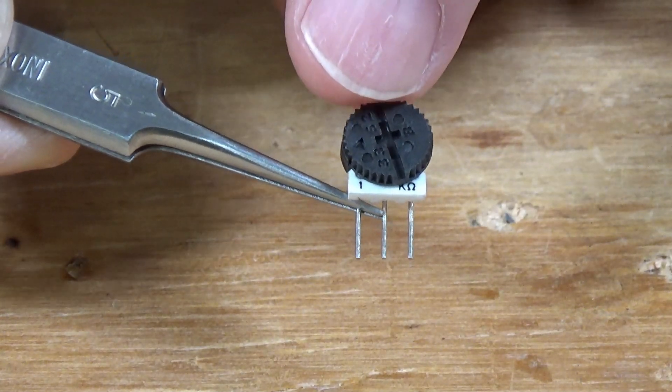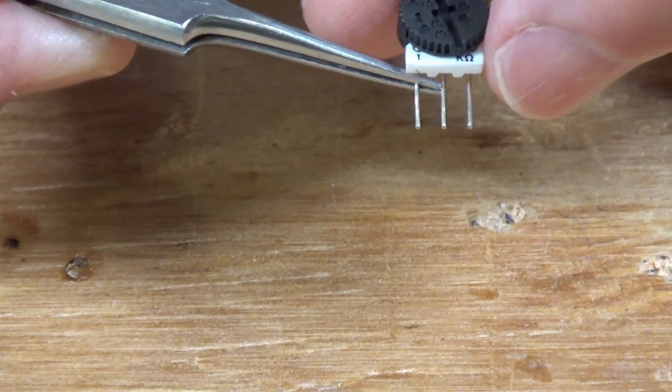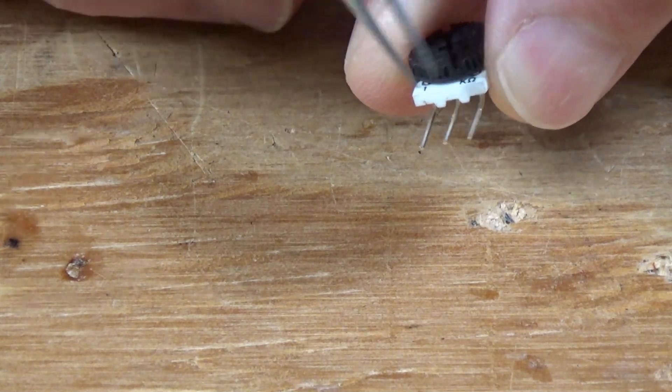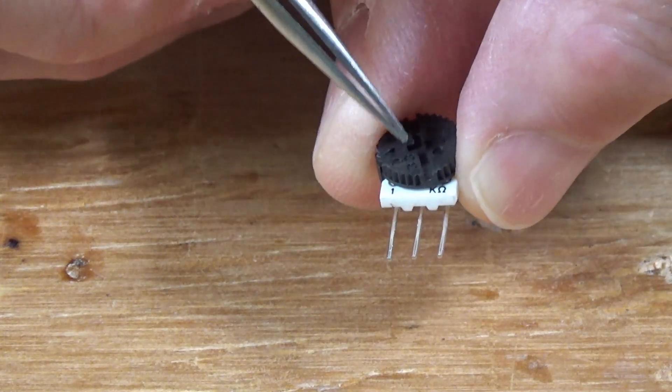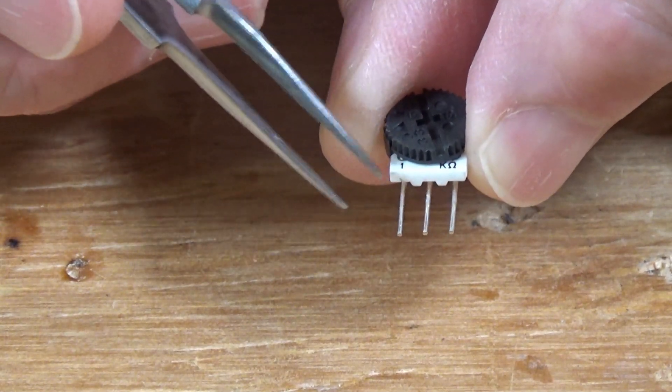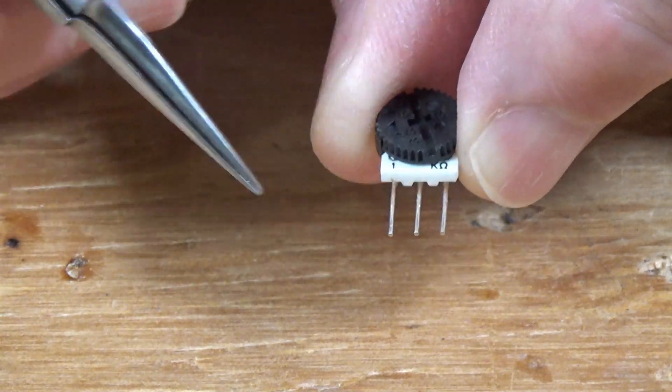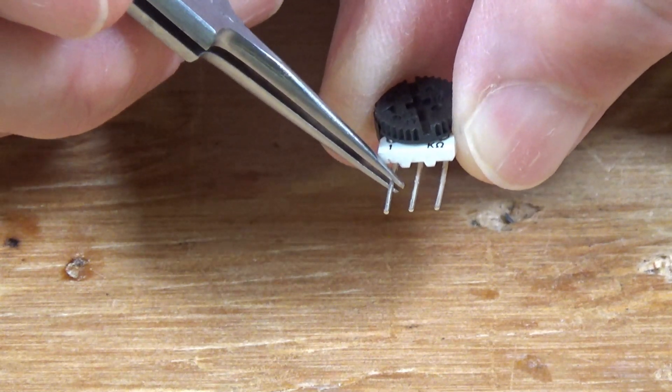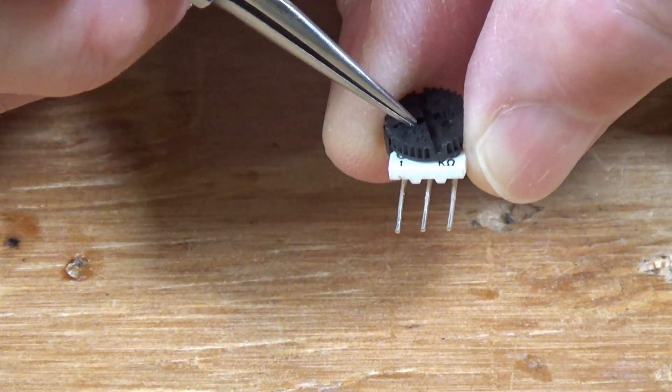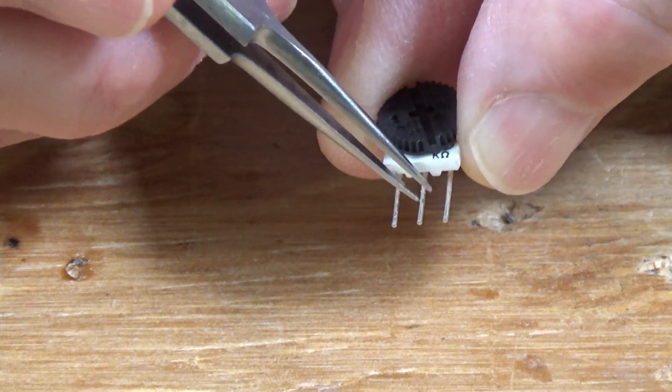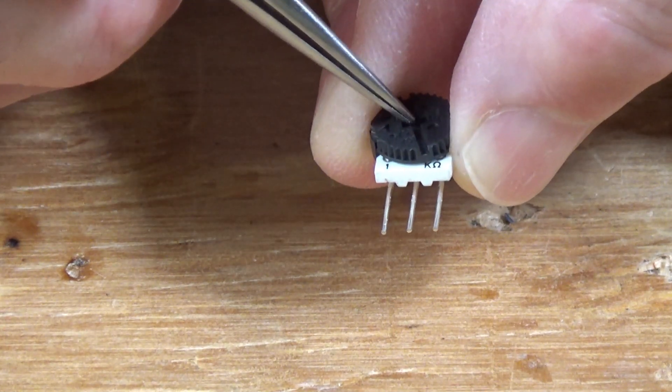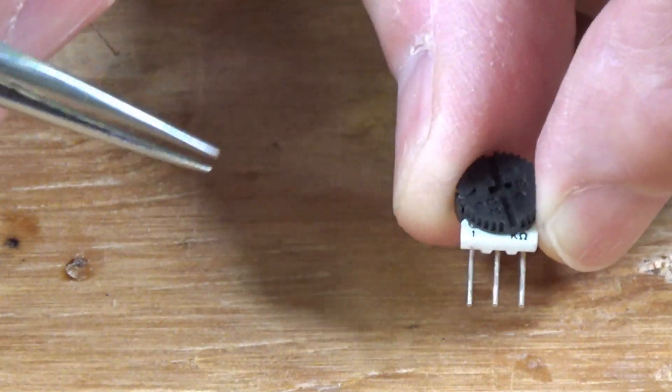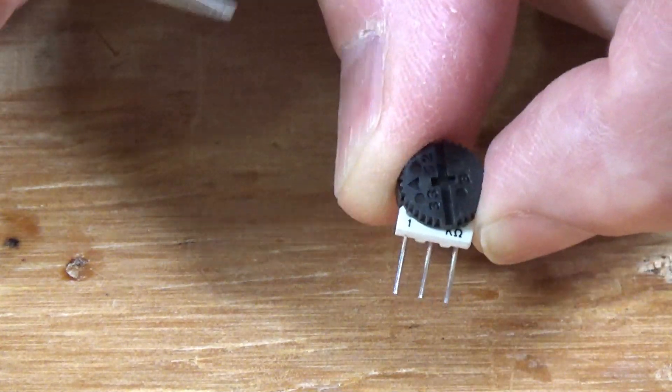And it's got three legs. The middle leg is the adjustment leg. And then you've got two outside legs here. And depending on how you hook it up, when you turn this little wheel in the center, the resistance will either increase or decrease. So you can hook one wire to this one and one wire to this one. And it will increase the resistance as you turn this wheel clockwise. If you hook it from here and here, then the resistance will go down as you go clockwise. It will go up as you go counterclockwise. So it's an interesting little component from that respect.